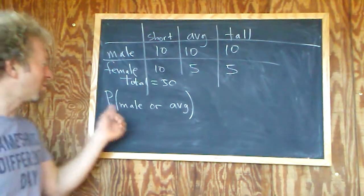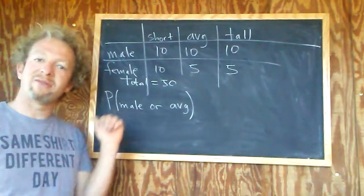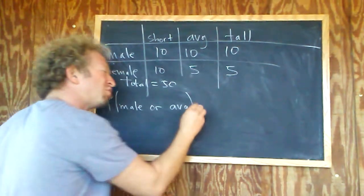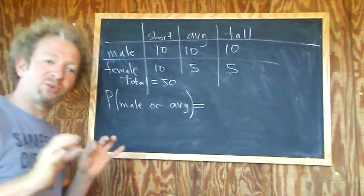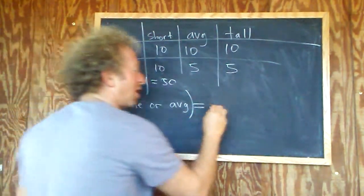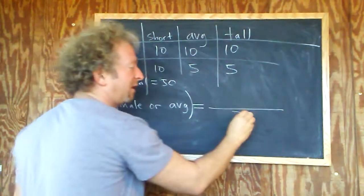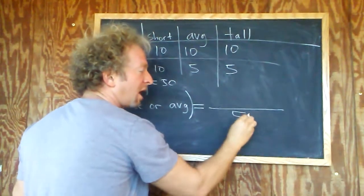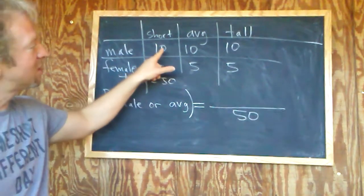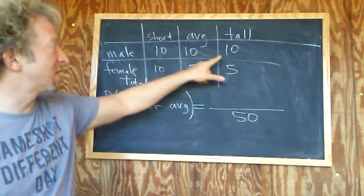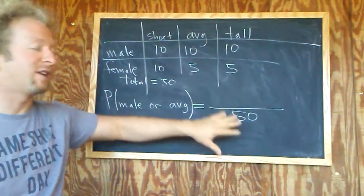In this question we want the probability of selecting someone that is male or average height. Whenever there's an 'or' in a table there's a really powerful way to do this. On the bottom you always have the total no matter what, so 50. The total comes from adding them all up — 10 plus 10 plus 10 is 30, 10 plus 10 is 20, so 30 plus 20 is 50.